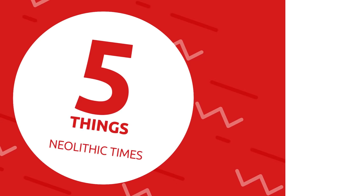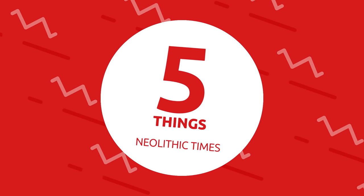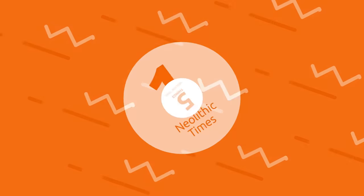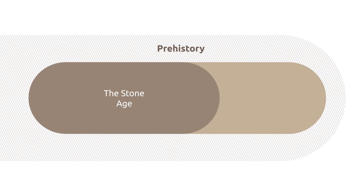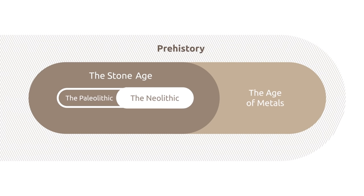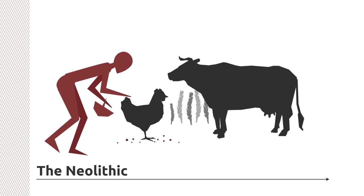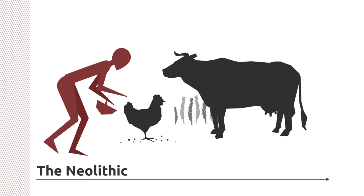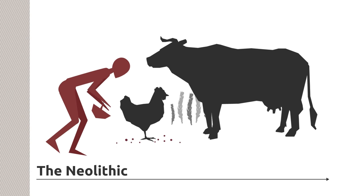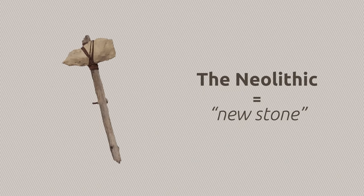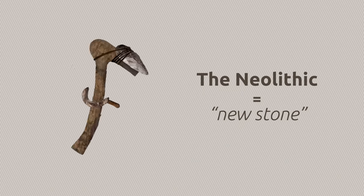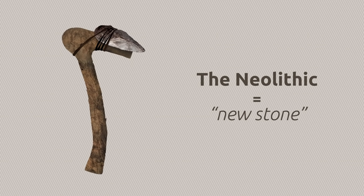Smile and Learn: five things you should know about Neolithic times. Prehistory is divided into two major stages: the stone age and the age of metals. The Neolithic period is the last stage of the stone age. Neolithic times began with the practice of agriculture and cattle raising. The word Neolithic means 'new stone,' and this explains why the stone tools that appeared during this period were much more elaborate than Paleolithic tools.